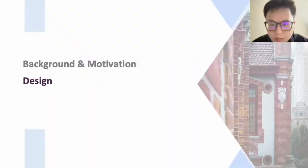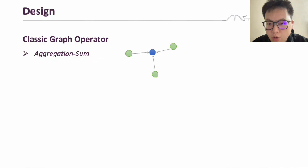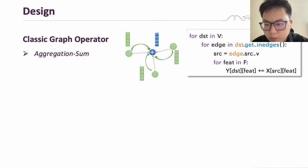So, how does UGraph solve these challenges? We will introduce the main design of UGraph in the following. We begin by focusing on the classic graph operator, aggregation sum. Aggregation sum is the most commonly used graph operator in GNNs, merging and accumulating the features of each enabled vertex for every vertex to obtain a new feature vector result.